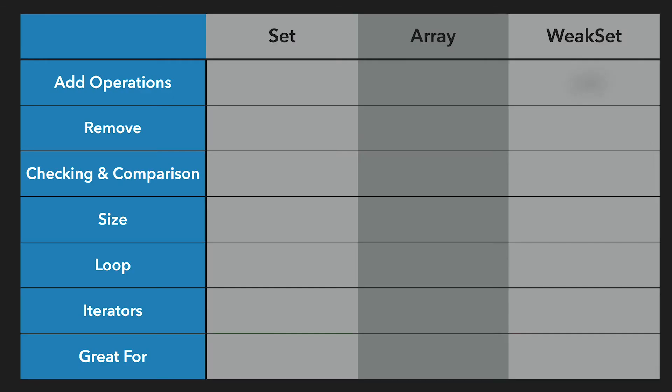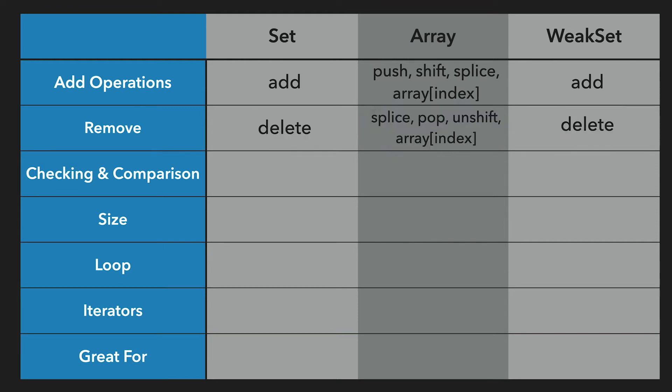For operations, Set and WeakSet use the add method to insert items, and arrays use push, shift, and splice as well as the index directly. Set and WeakSet use the delete method to remove items, and arrays use pop, shift, and splice as well as the index directly.